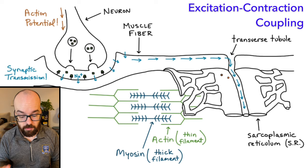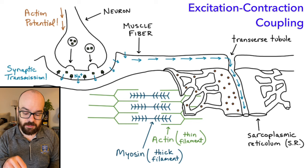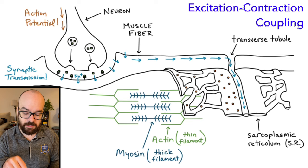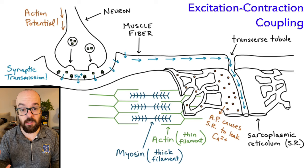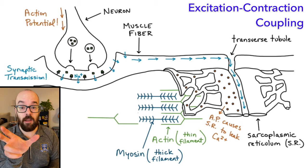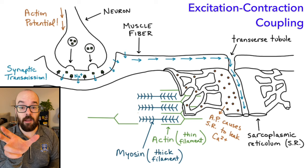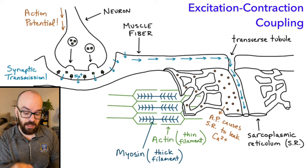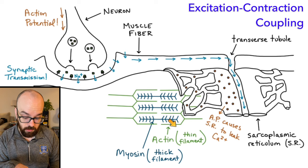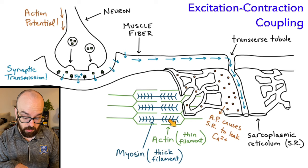The signal travels down into the transverse tubule, down to the sarcoplasmic reticulum, which is going to be filled with calcium ions. As soon as the signal gets there, these calcium ions are going to get released out into the myofibrils. That all started with the action potential that through this chain of events has now caused the sarcoplasmic reticulum to leak calcium ions into the myofibrils to interact with the myofilaments. In the presence of calcium, the myofilaments will start grabbing onto each other and contracting. The length of the actin and the length of the myosin didn't change, but as they pulled on each other, the length between the Z lines decreased, and now we have a contracted muscle.